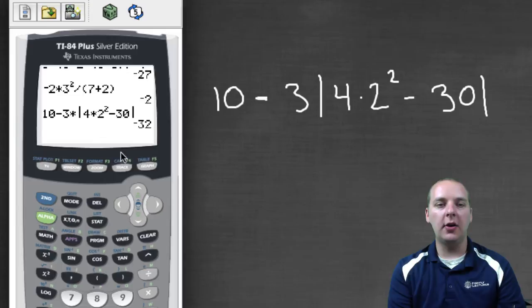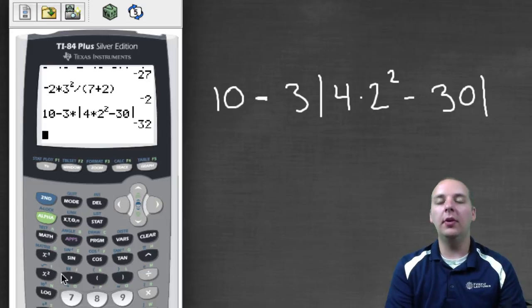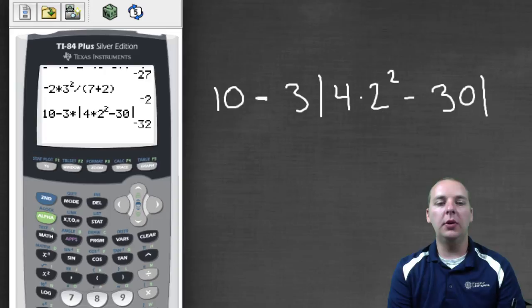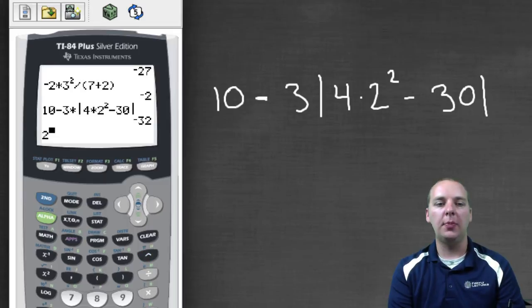Now before I click off of the calculator here, let me make one remark about exponents. The ones I've done have just coincidentally been squares. If you had a cube, or if you were doing let's say to the fifth power, there's not a fifth power button. So if you wanted for instance 2 raised to the fifth power, you would use this caret button right here. And that's how you would do higher powers, like 2 to the fifth.